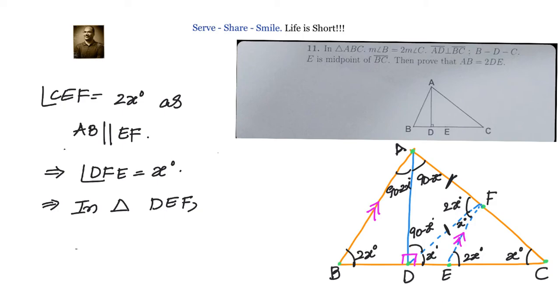So we can write AB equals 2EF, but EF equals DE. Therefore, AB equals 2 times DE.